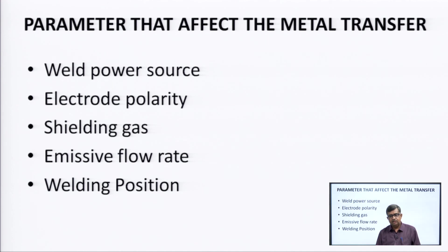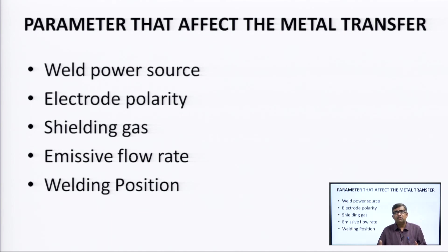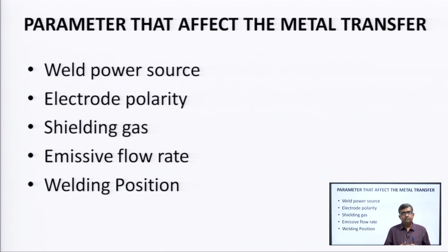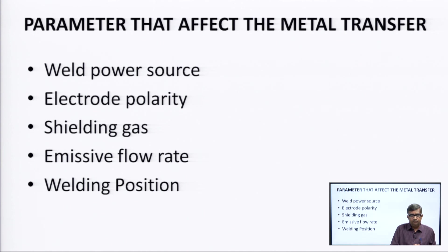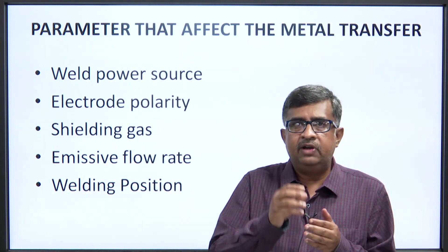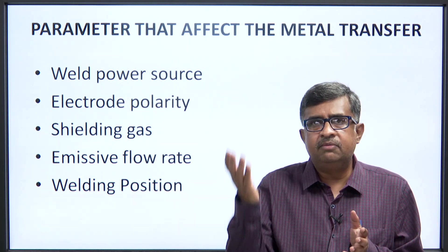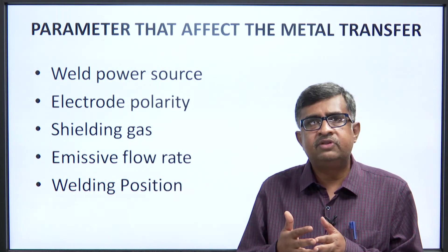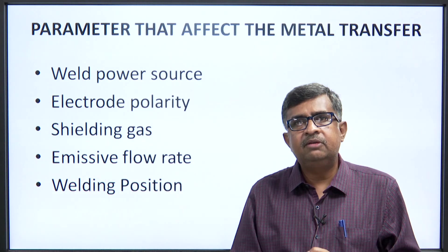Parameters that affect metal transfer include: welding power source and current supply rating, electrode polarity, shielded gas and emissive flow rate, and welding position. Any one of these will have an effect on welding. Going too fast or too slow will create problems, so optimum parameter control must be taken care of.